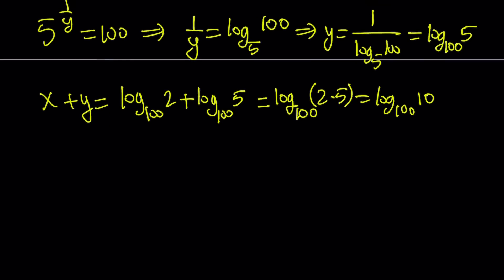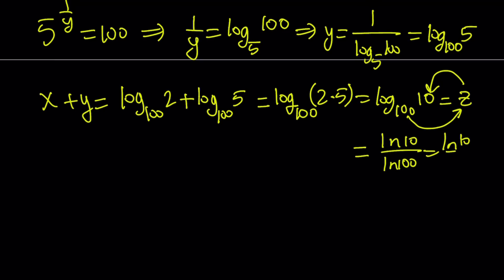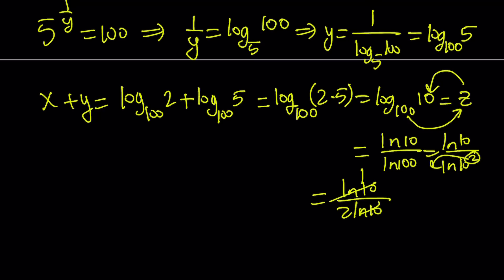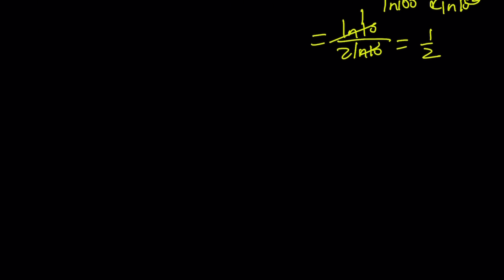We can use the definition of logarithms one more time and write this as 1 half. Think about it: 100 to the power of what number equals 10? The answer is 1 half. Alternatively, using change of base, this is ln 10 over ln 100. But ln 100 is ln 10 squared, so moving the 2 to the front gives ln 10 over 2 ln 10, and ln 10 cancels out, leaving 1 half again. So x plus y equals 1 half.